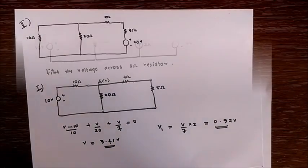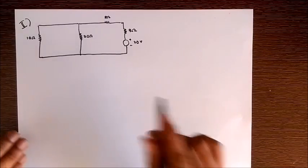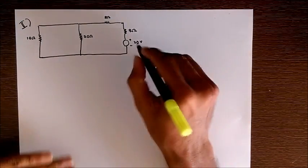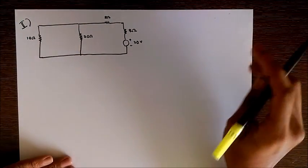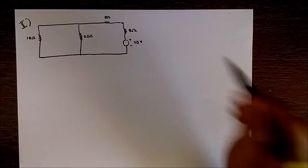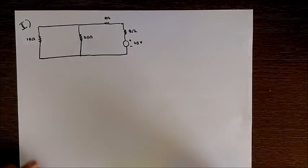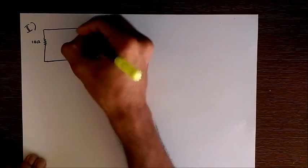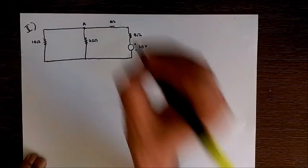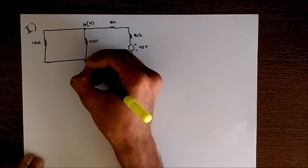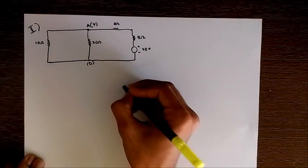Now we move on to the next voltage source. Now we have to find out the voltage drop across 2 ohm resistor. So here also I am applying the nodal analysis. Node A with voltage V and this is the reference voltage of 0.